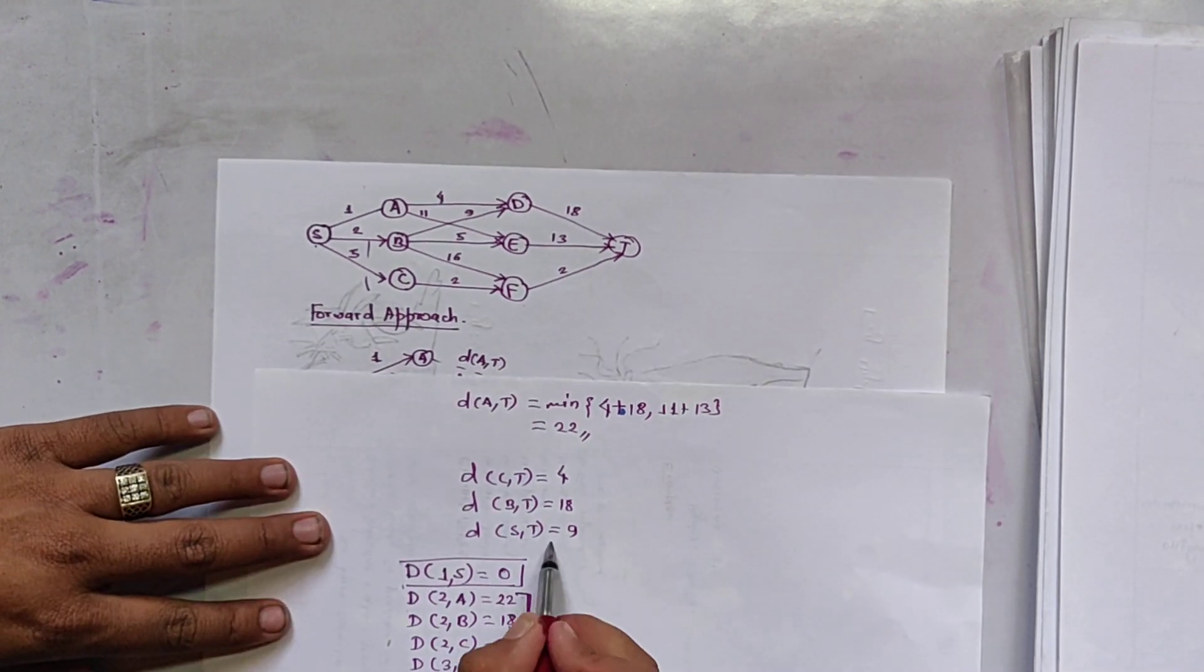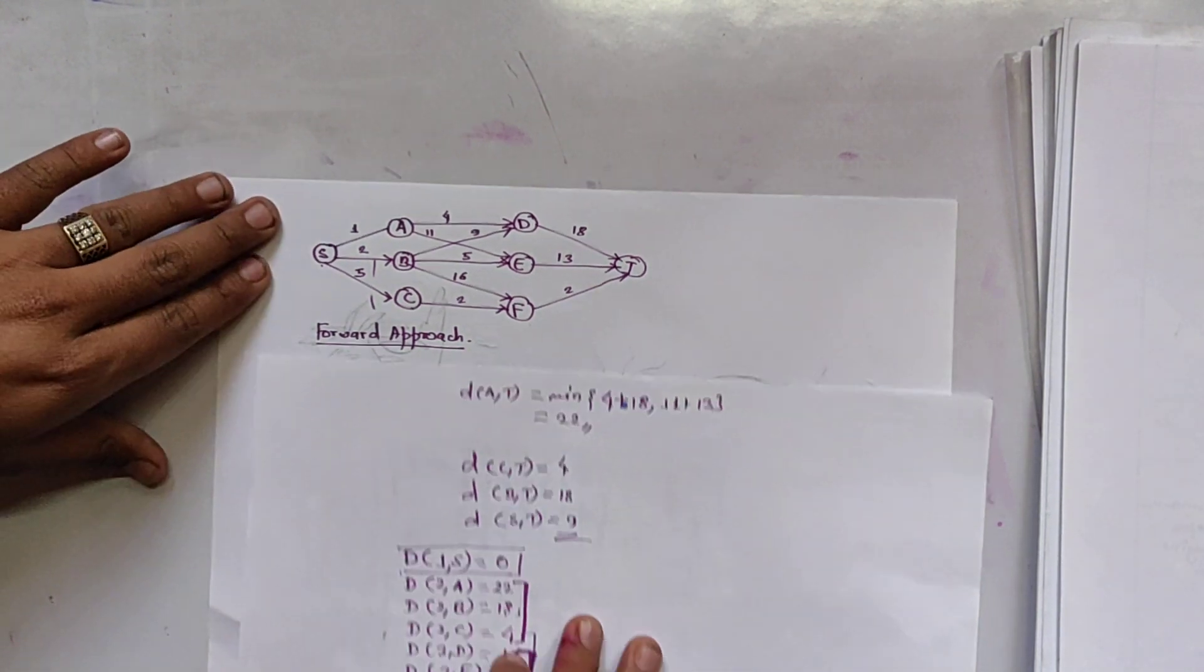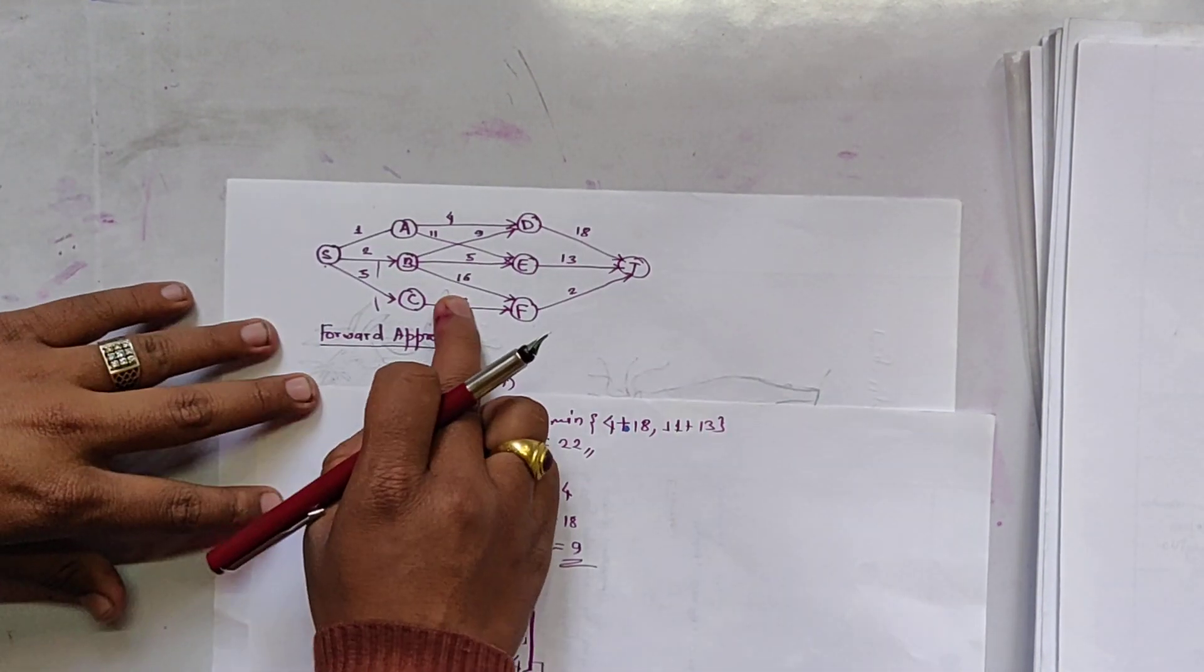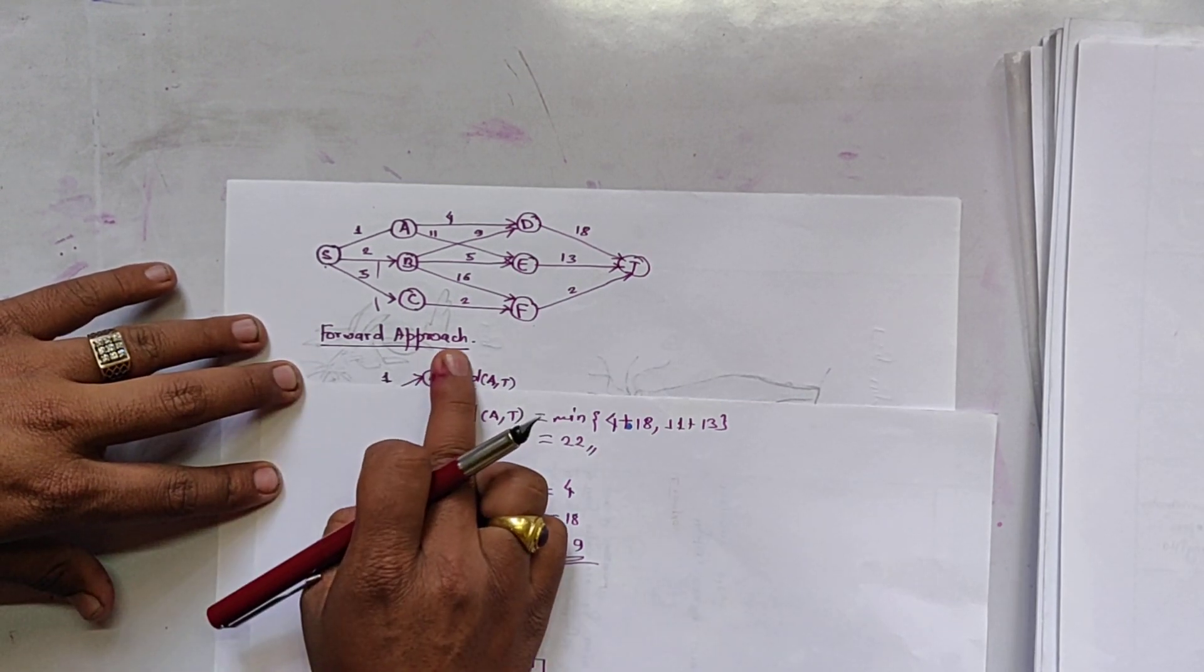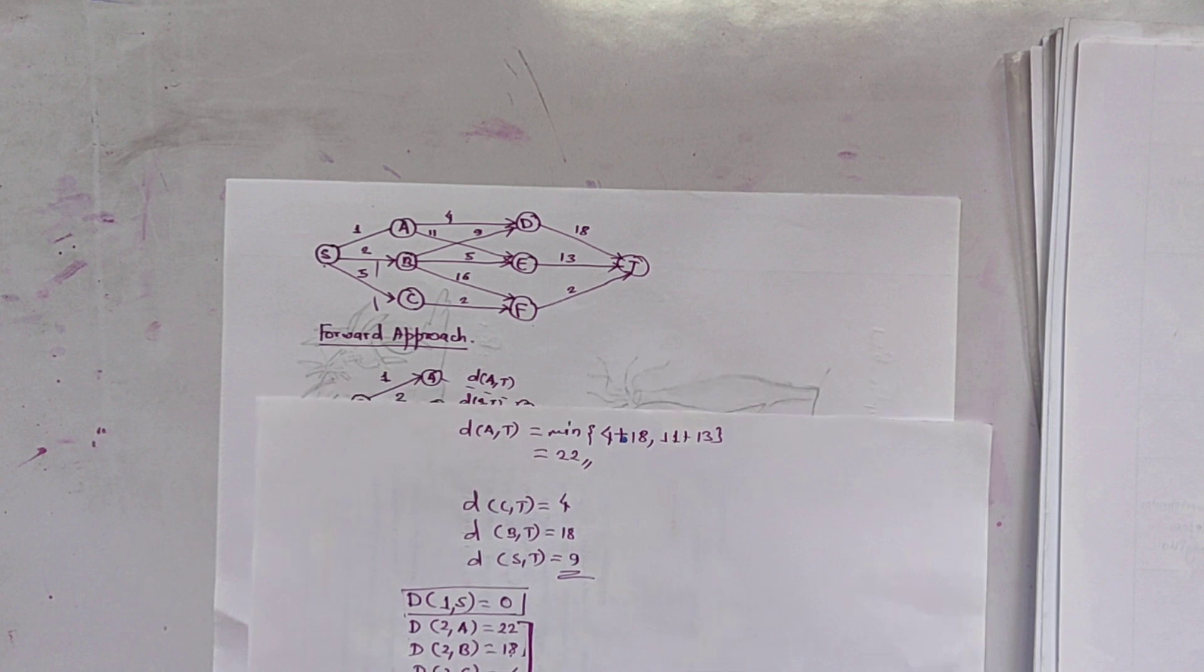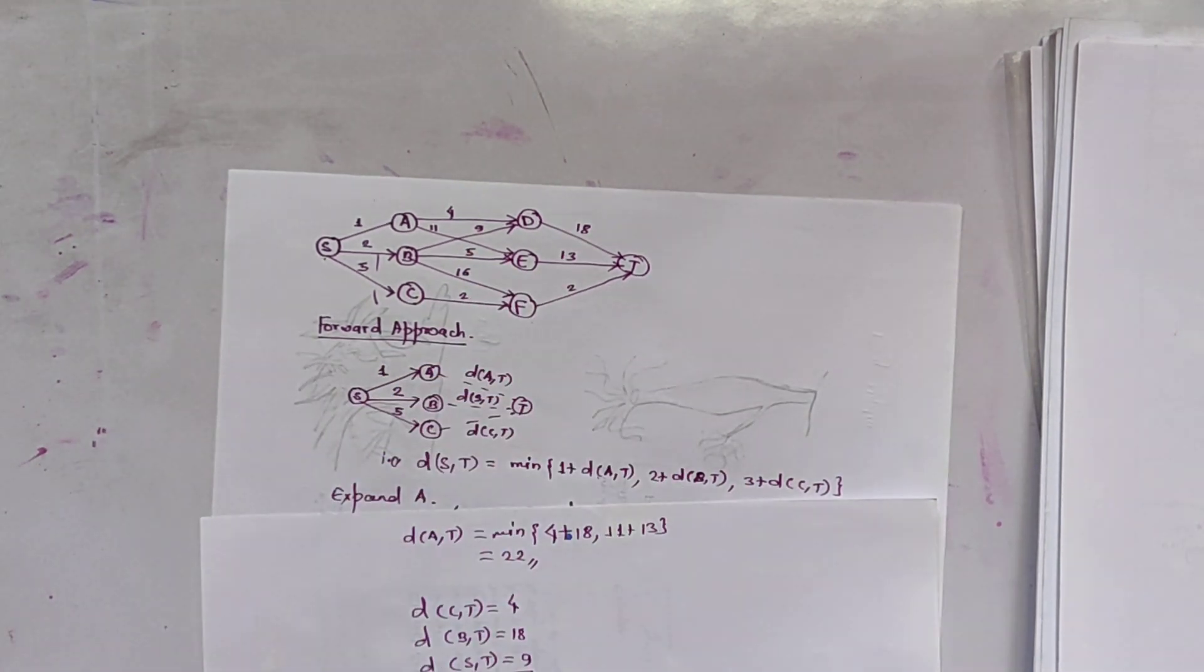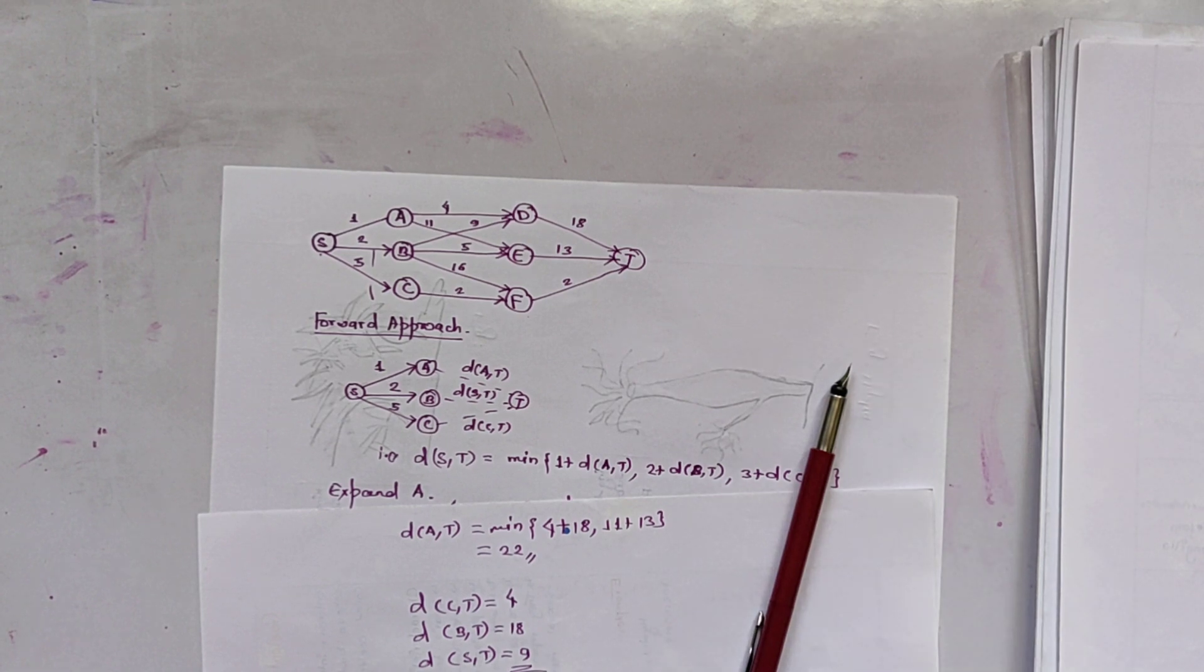So that is the shortest path from S to T. So this is the method to solve the multistage graph by using forward approach of DP. So in next video, I will be solving this same multistage graph by using backward chaining. Thank you. Bye-bye.